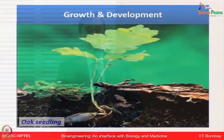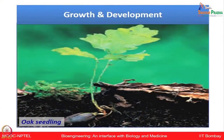Let us look at this oak seedling, one example of a plant which shows growth and development — required for all living organisms. The inherited information in the plant is continued to the next plantlet or seedlings, and is required for the growth and development of the organism.